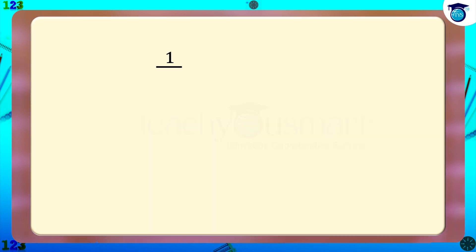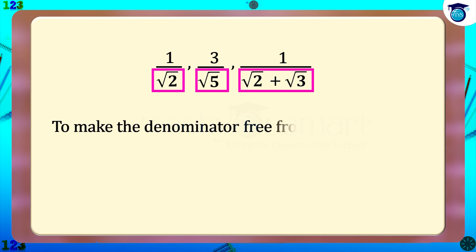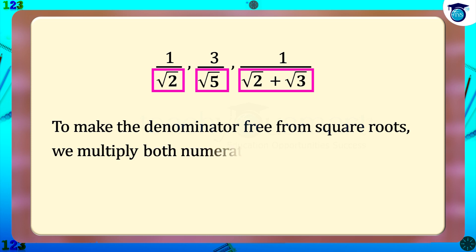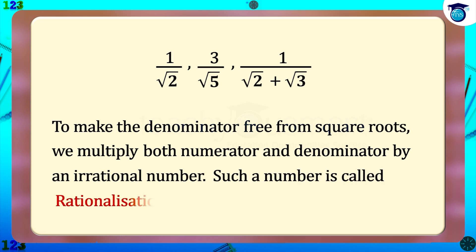Sometimes we come across expressions containing square roots in the denominators. Addition, subtraction, multiplication, and division of such expressions is convenient if the denominators are free from square roots. To make the denominator free from square roots, we multiply both numerator and denominator by an irrational number. Such a number is called a rationalization factor.